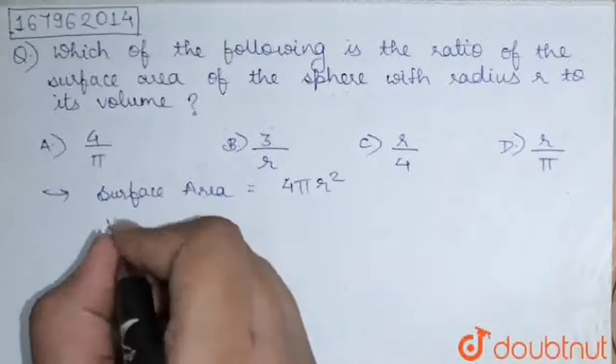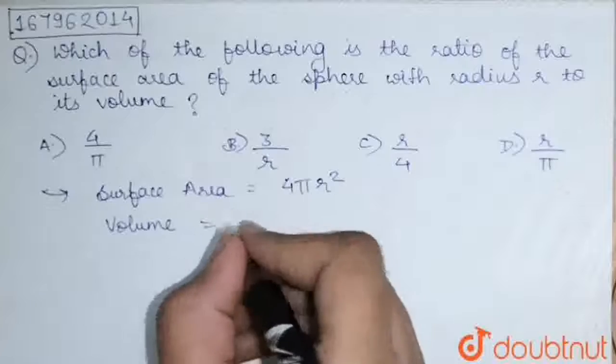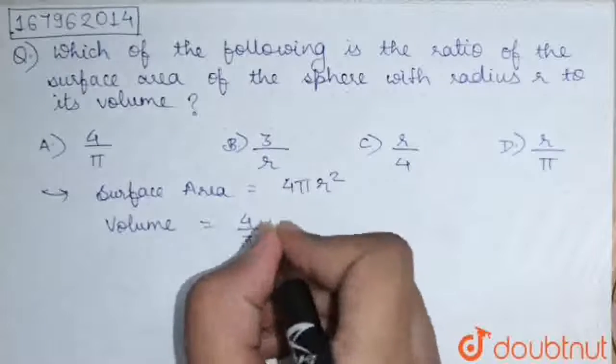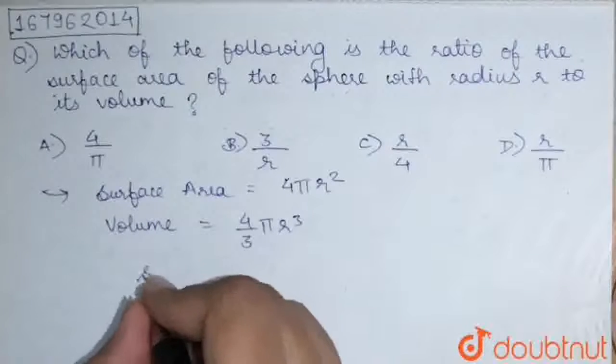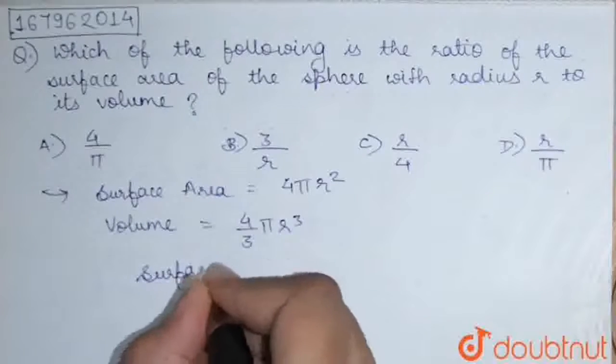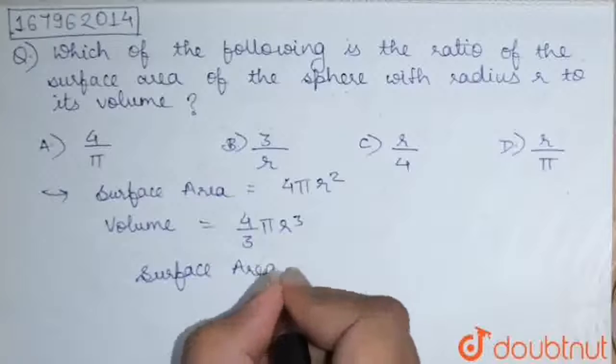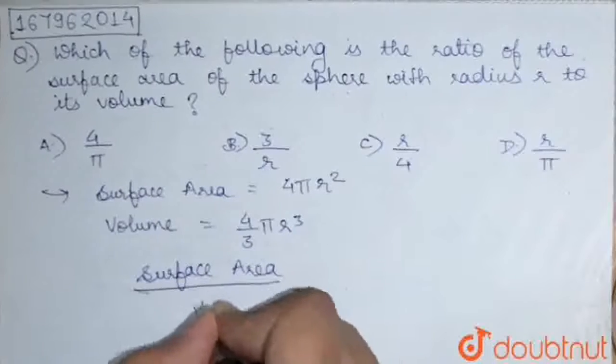And volume of sphere is 4 by 3 pi r cube. Now, we are asked surface area to volume ratio.